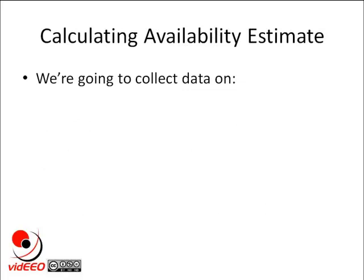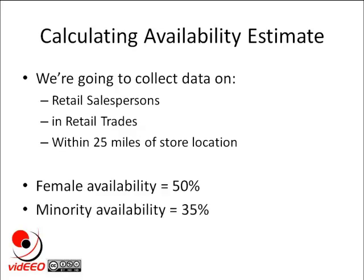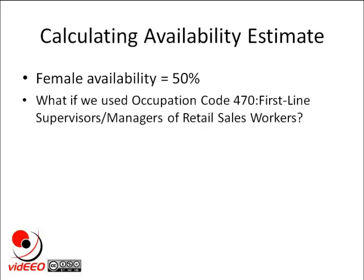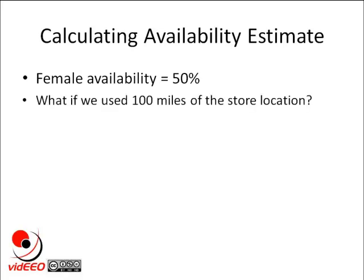So we've decided to collect data on retail salespersons in retail trades within 25 miles of the store location. Using our census data, we find that females are 50% of all retail salespersons in retail trades working within 25 miles of our store location, and minorities are 35%. These are our external availability estimates. Let's take a closer look at the female availability. What would have happened if we had used first-line supervisors as our occupation? The availability would have dropped from 50% to 30%. What if we used all industries instead of just retail? The availability would have increased to 56%. What if we used 100 miles instead of 25 miles? The availability would be 45%.